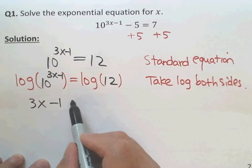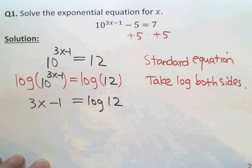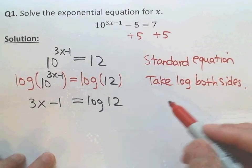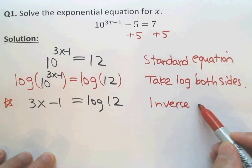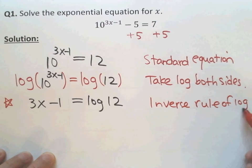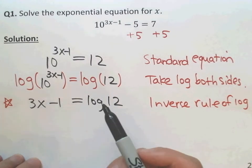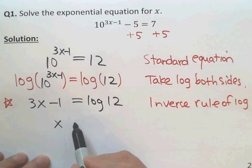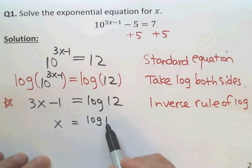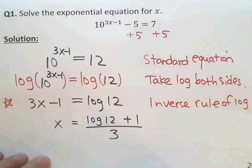The left side is 3x minus 1, and the right side is log of 12. This is the key step — we used the inverse rule of logarithms. Now we have a linear equation. Add 1 to both sides and then divide by 3. So x equals log(12) plus 1, divided by 3. And that's the answer — we just solved the linear equation.